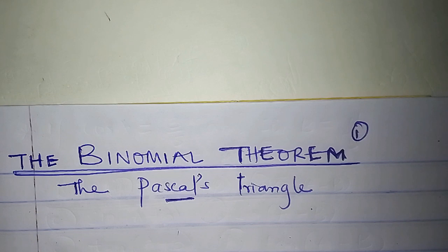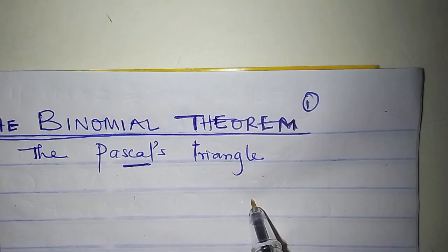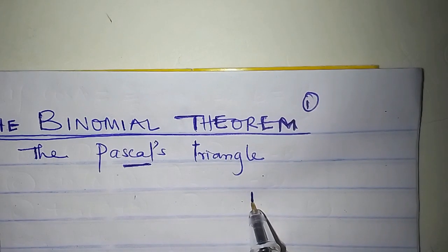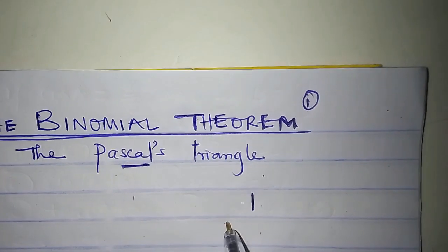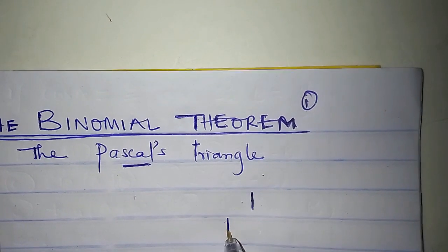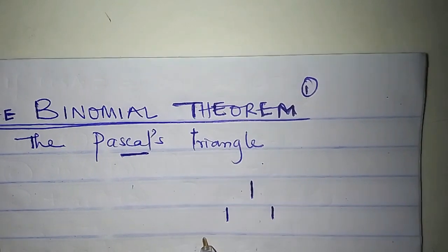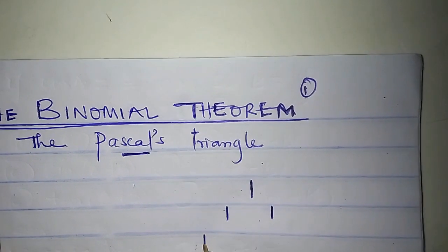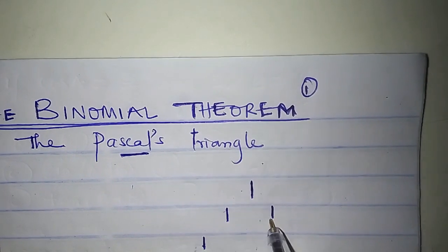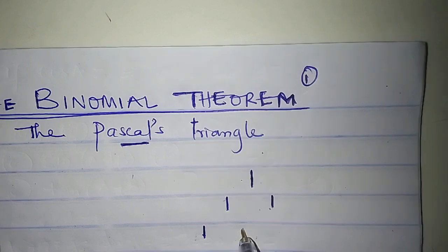So what I'm gonna do now, first of all, is to create the Pascal's triangle. Just watch. Alright: 1, then 1, 1, then 1, 1 plus 1 is 2,